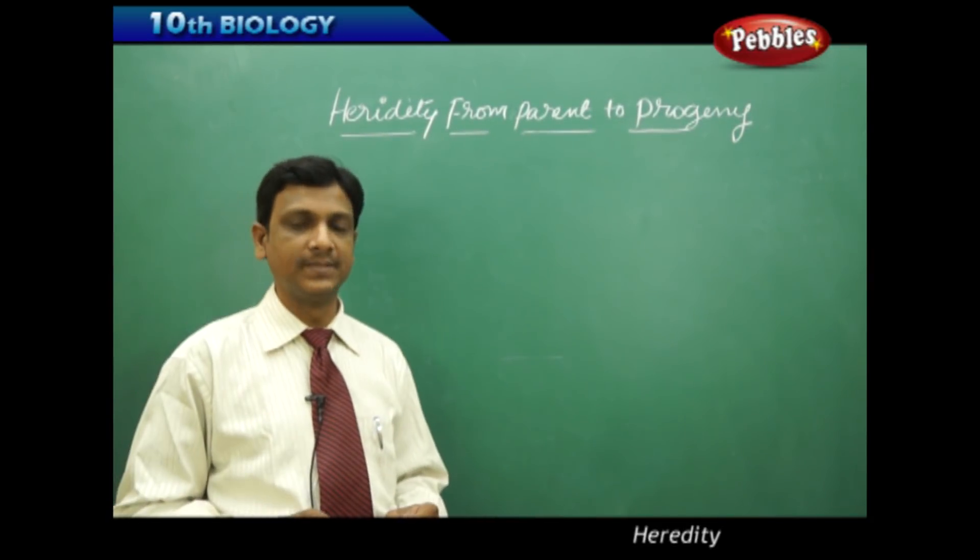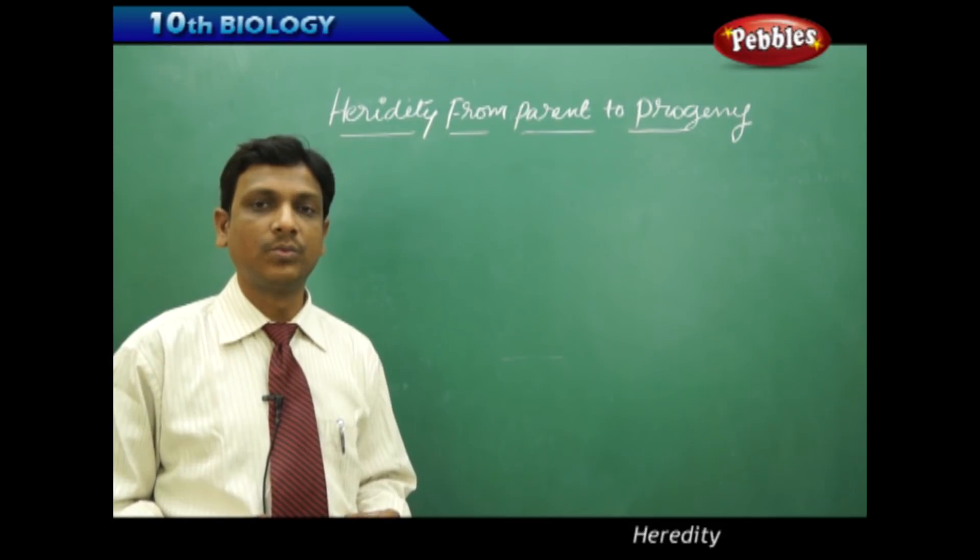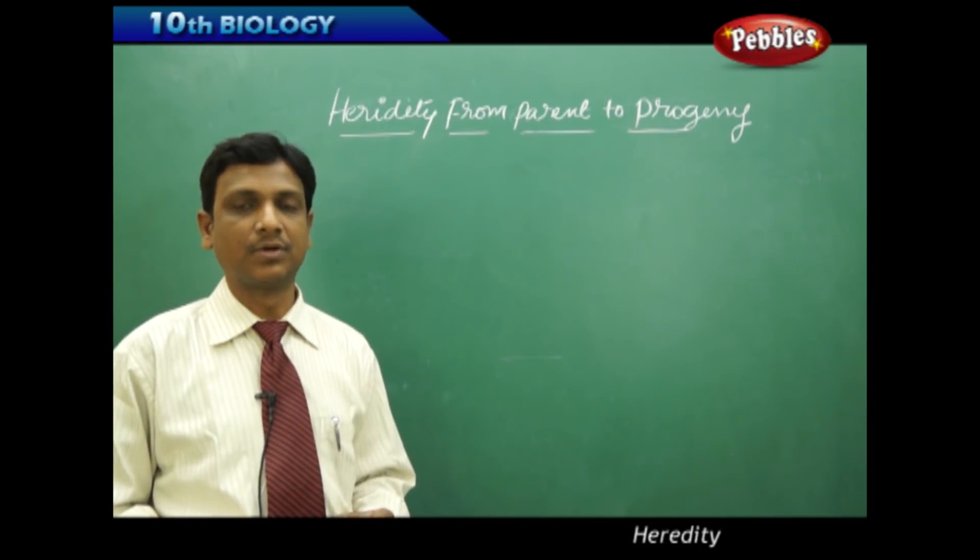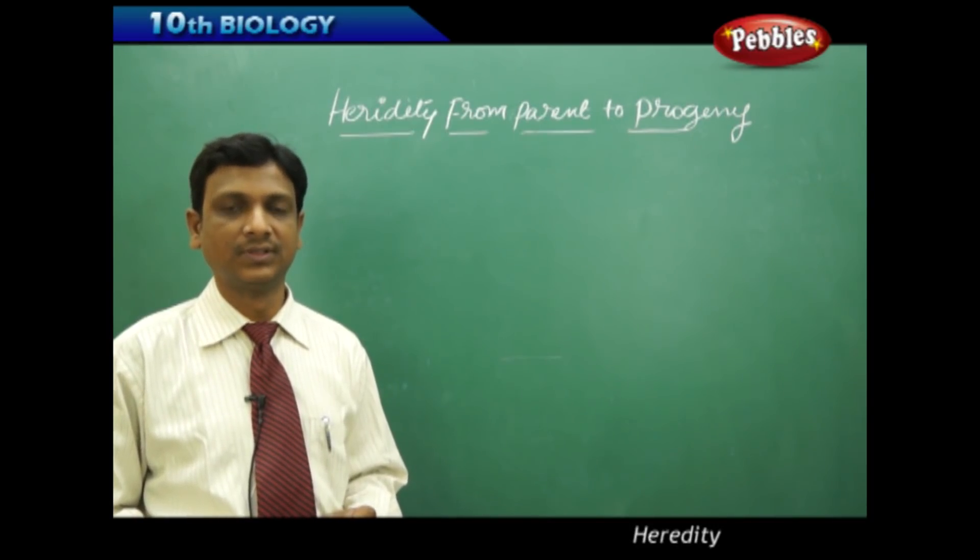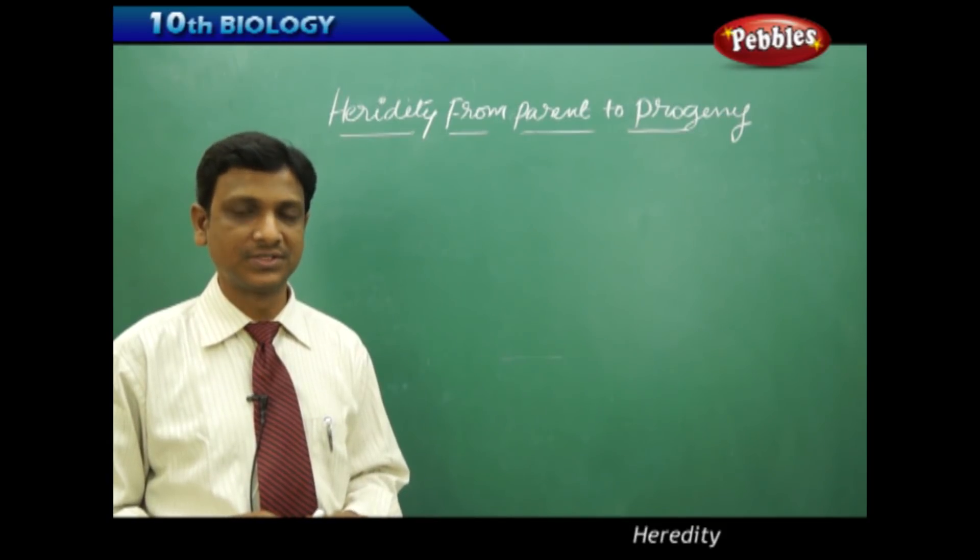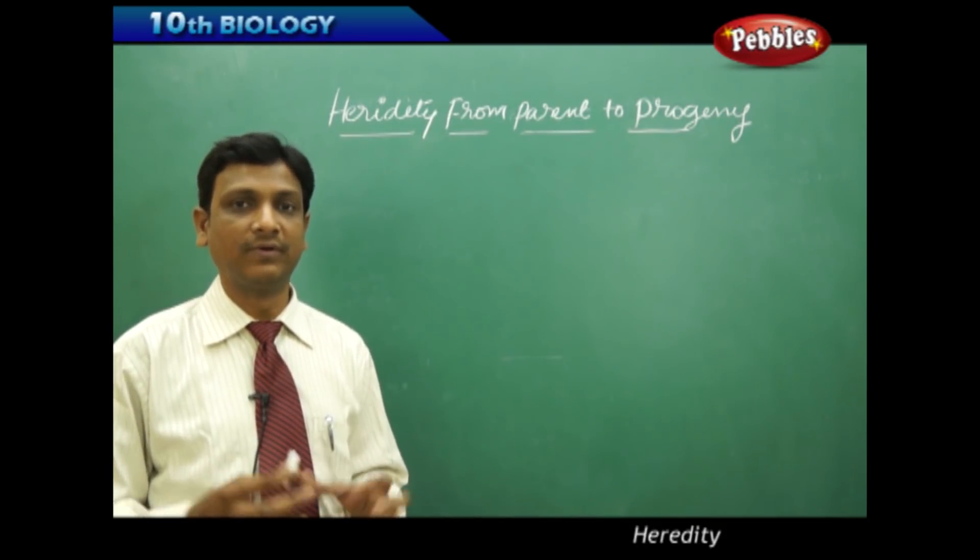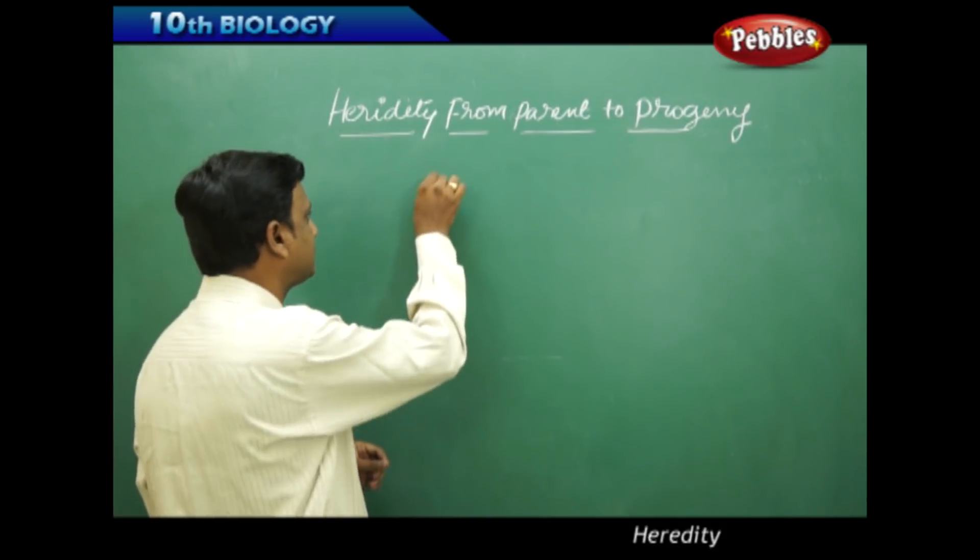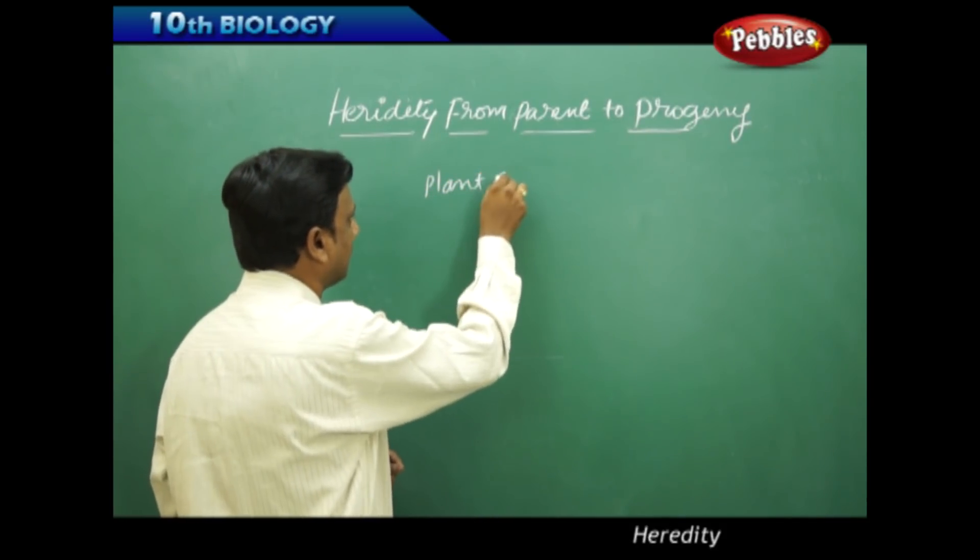Heredity from parent to progeny. What we are going to learn in this chapter is about heredity and inheritance and the process of evolution. We see a great variety of life around us. The world is full of diverse organisms, various kinds of plants and animals.